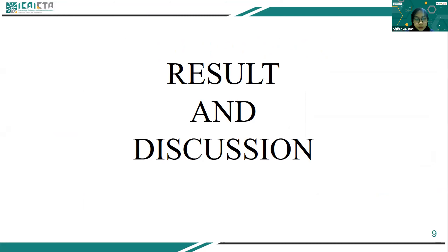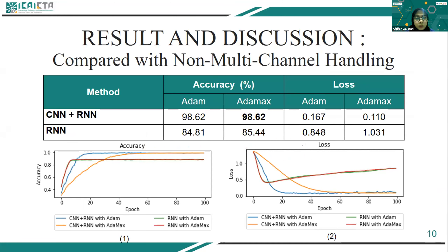The next is result and discussion. The first experiment compares the hybrid CNN and RNN as an identification method with multi-channel handling versus the RNN-only method. The hybrid CNN and RNN achieved an accuracy of 98.62% with AdamX optimization over 100 epochs, maintaining stability as epochs increase. The RNN-only method showed fast early accuracy improvement but plateaued at only 85.44%. Thus, the use of the hybrid identification method with multi-channel attention improved accuracy by 13.18%.